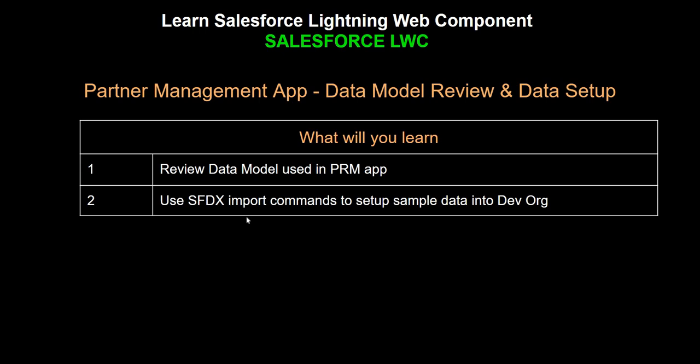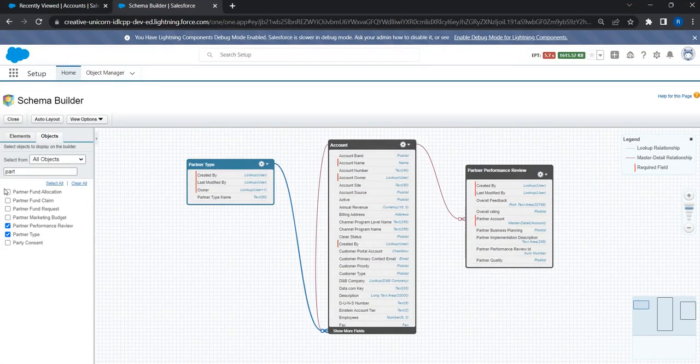In this video we are going to learn about data model review and then we will also do the data setup for our partner management app. In the last video we talked about how to set up the base code that involves all the tabs, the application, and the objects needed to build the application. In this video we will take a deep dive and see what different custom fields and custom objects are used, and how we can import or create test data for our application.